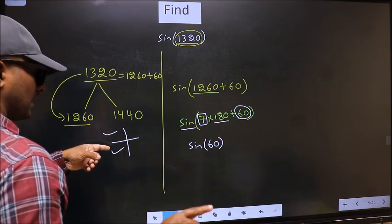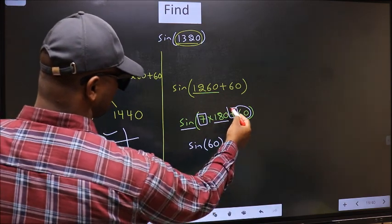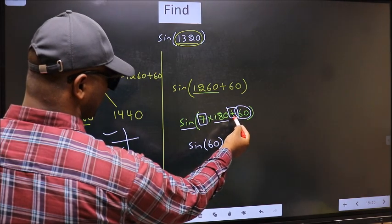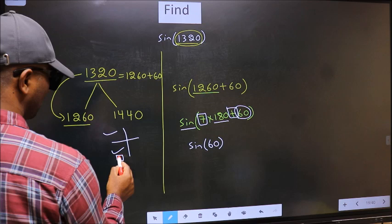So now to select the quadrant, we should look at this symbol. Here we have plus. That means the angle lies in the third quadrant.